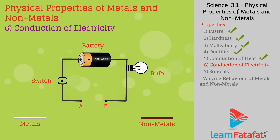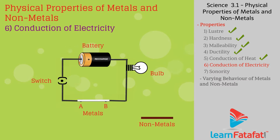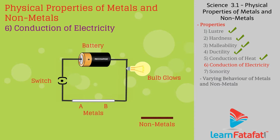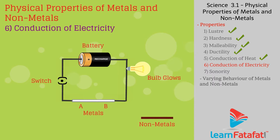Sixth, conduction of electricity: in this experiment, the metal is placed under observation between the two terminals A and B. The bulb glows because the metal placed between terminals A and B provides a path for the current. Thus metals are good conductors of electricity.